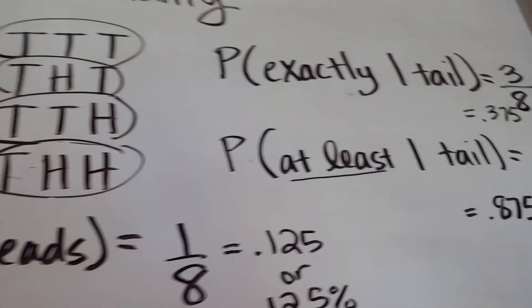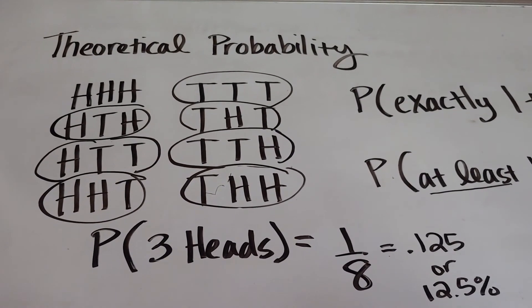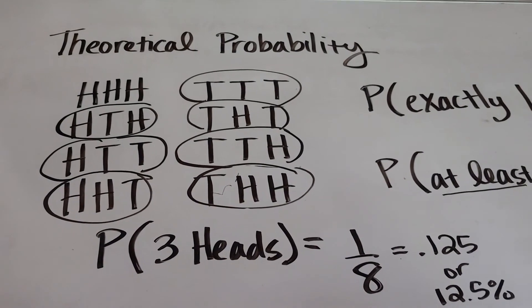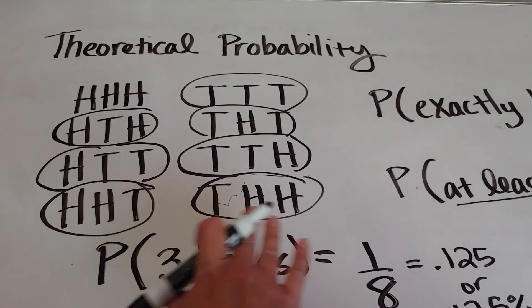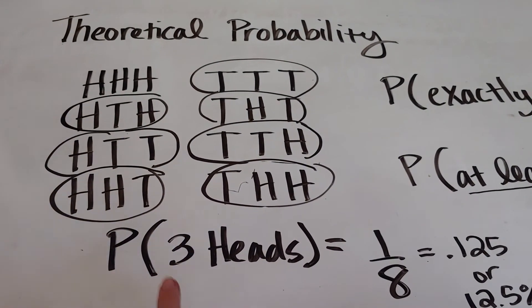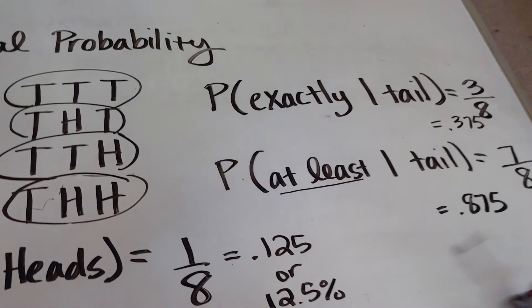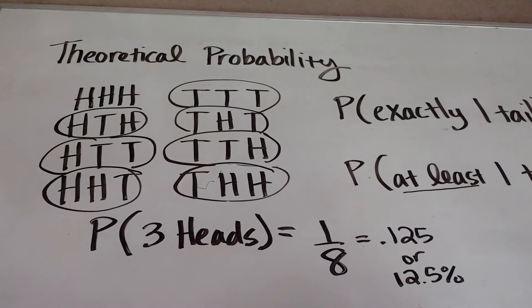So the reason why this is considered theoretical probability is that you guys didn't see me flip a single coin, right? We didn't do 30 trials and record our results. In theory, these are all eight outcomes that can happen, so in theory, the probability of getting three heads is one out of eight, and likewise, those probabilities are the same. I hope this helps with theoretical probability.